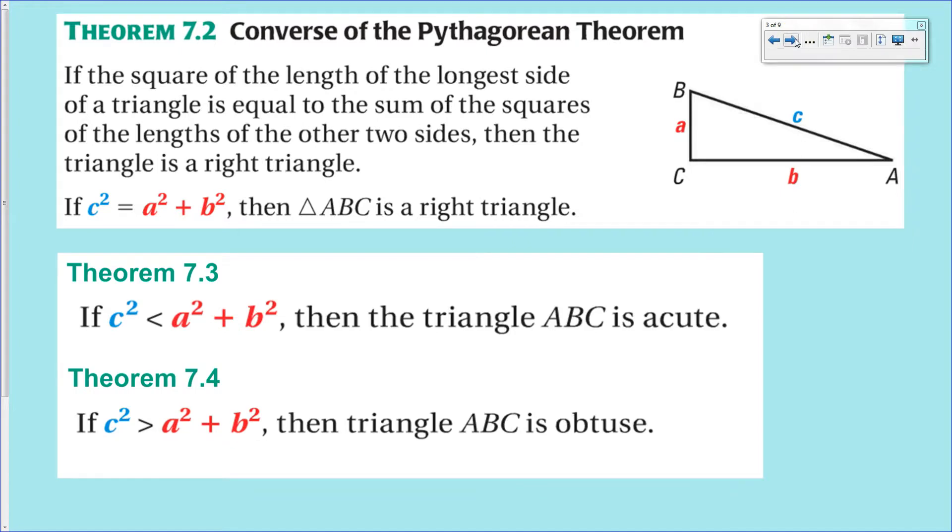Basically what it says is if you have an obtuse angle, then c² is going to be bigger than the sum of the squared of the legs of the hopefully right triangle. But if you find c² to be larger than the other two terms added together, then it will be classified as an obtuse triangle. And if you find that c² is less than the sum of the other two sides squared, then that triangle will be acute.